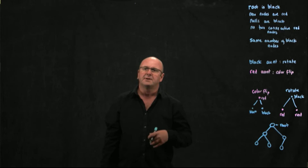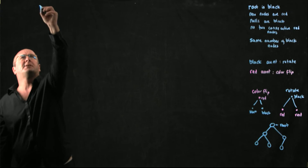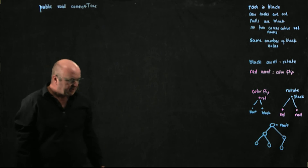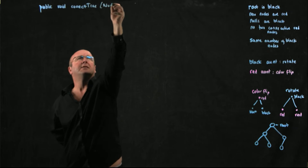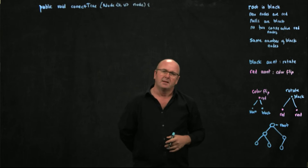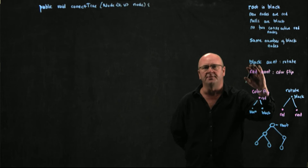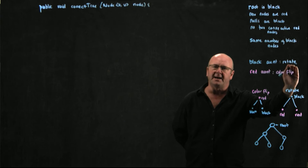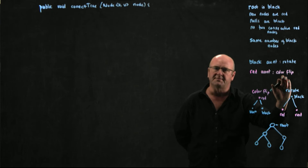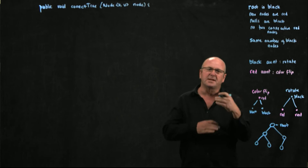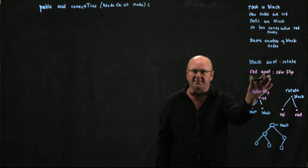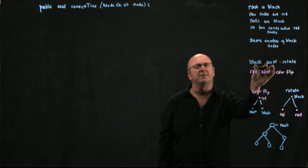Now, what about our correctTree method that we call from checkColor? We're going to have a public void correctTree method that takes a single node — the node causing the violation — and figures out how to correct it. It will ask: is the aunt black? If so, do a rotation. Is the aunt red? If so, do a color flip. I like to keep methods short, so I'll delegate the rotation to another method.